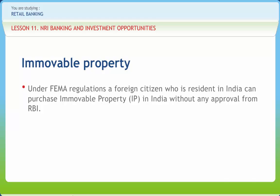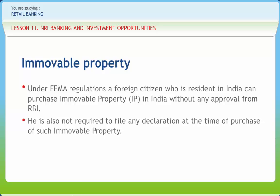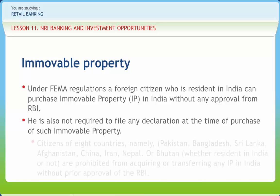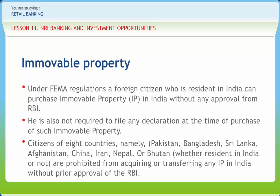Under FEMA regulations, a foreign citizen who is a resident in India can purchase immovable property in India without any approval from RBI, and is not required to file any declaration at the time of purchase. Citizens of eight countries — Pakistan, Bangladesh, Sri Lanka, Afghanistan, China, Iran, Nepal or Bhutan — whether resident in India or not, are prohibited from acquiring or transferring any immovable property in India without prior approval of the RBI. However, this prohibition is not applicable to immovable property acquired on lease for a period not exceeding five years. Investment in agricultural property, plantation and farmhouse is prohibited for all classes of persons resident outside India, be it NRIs, OCBs, foreign citizens or other foreign entities.